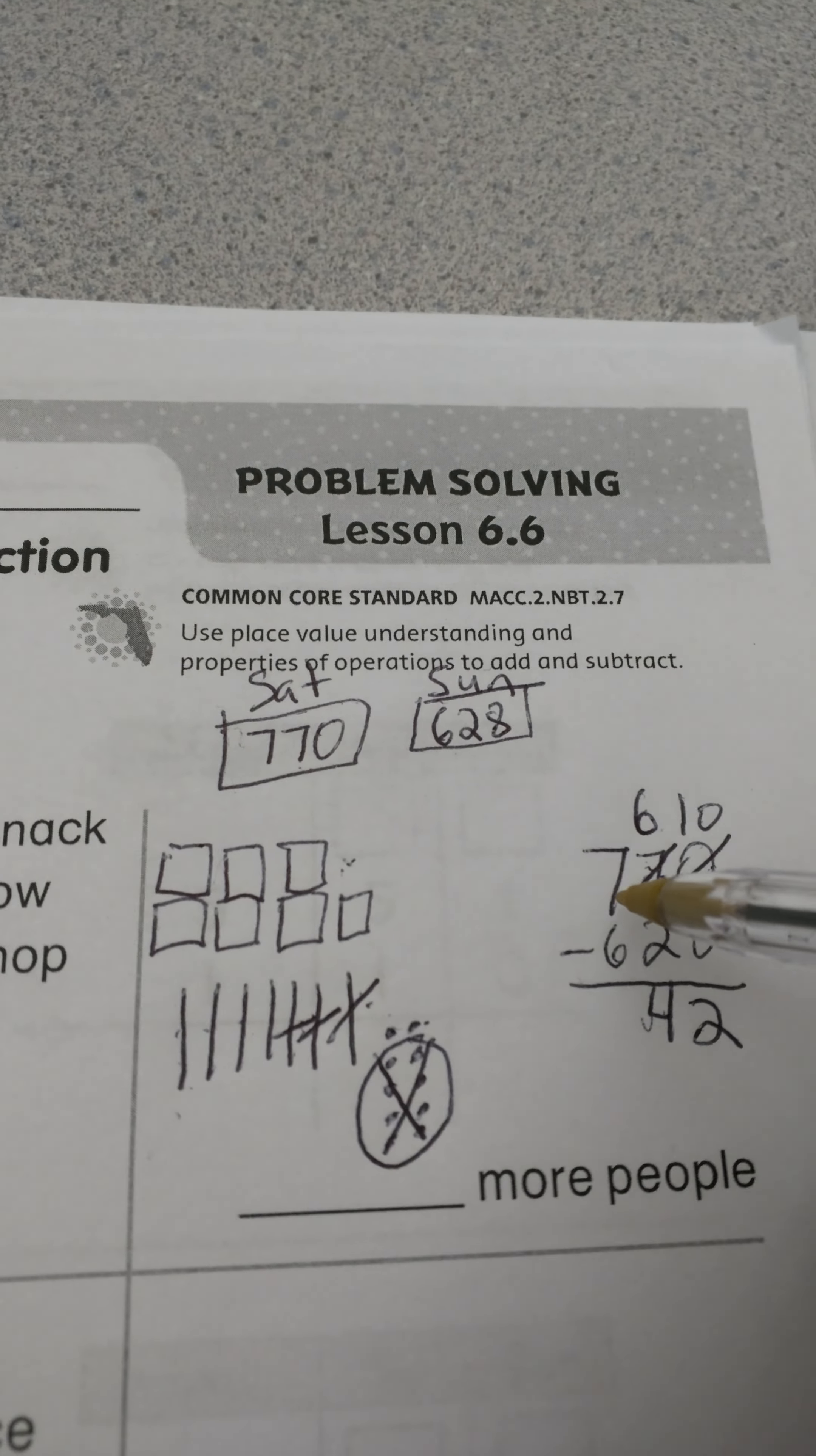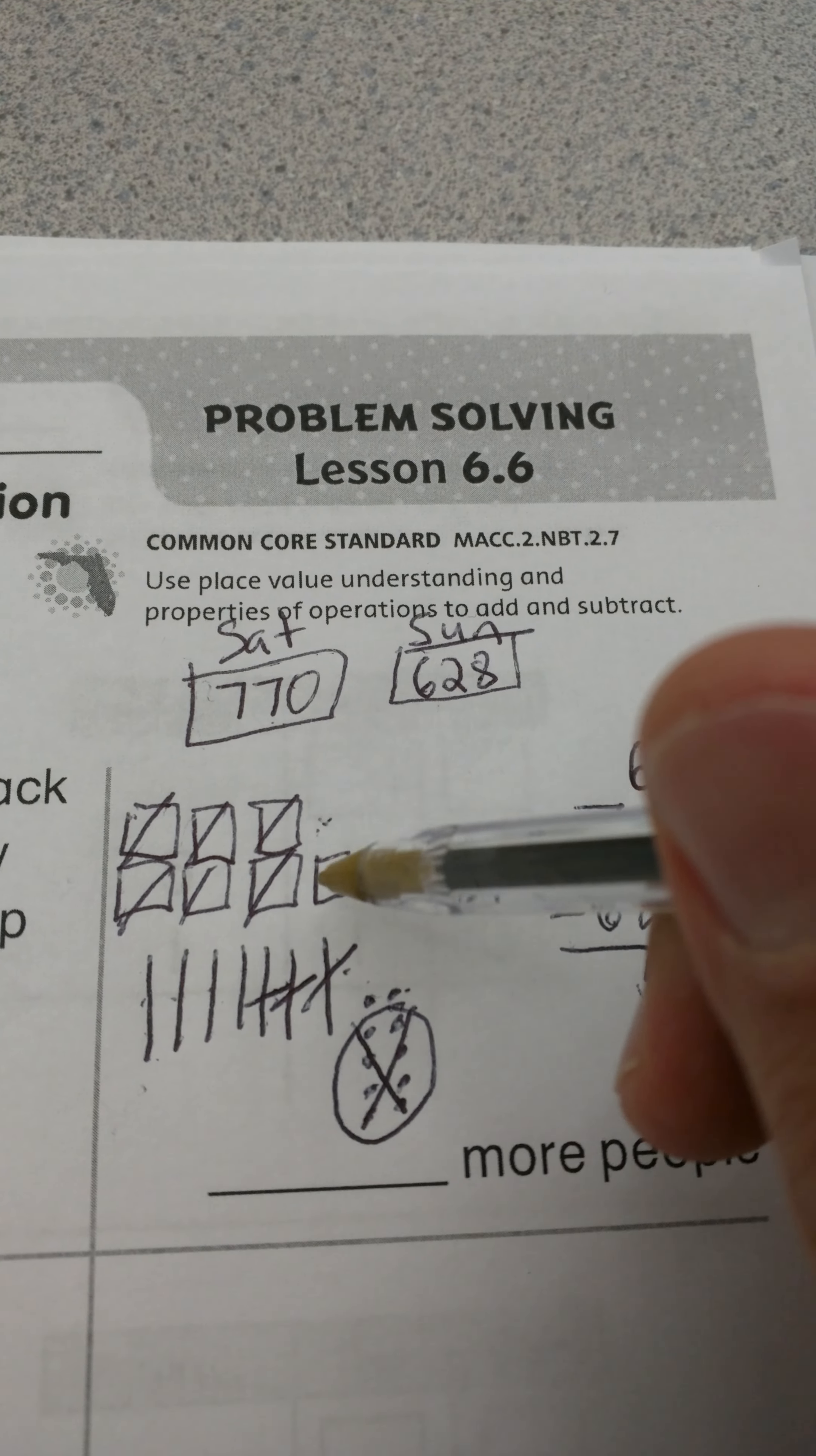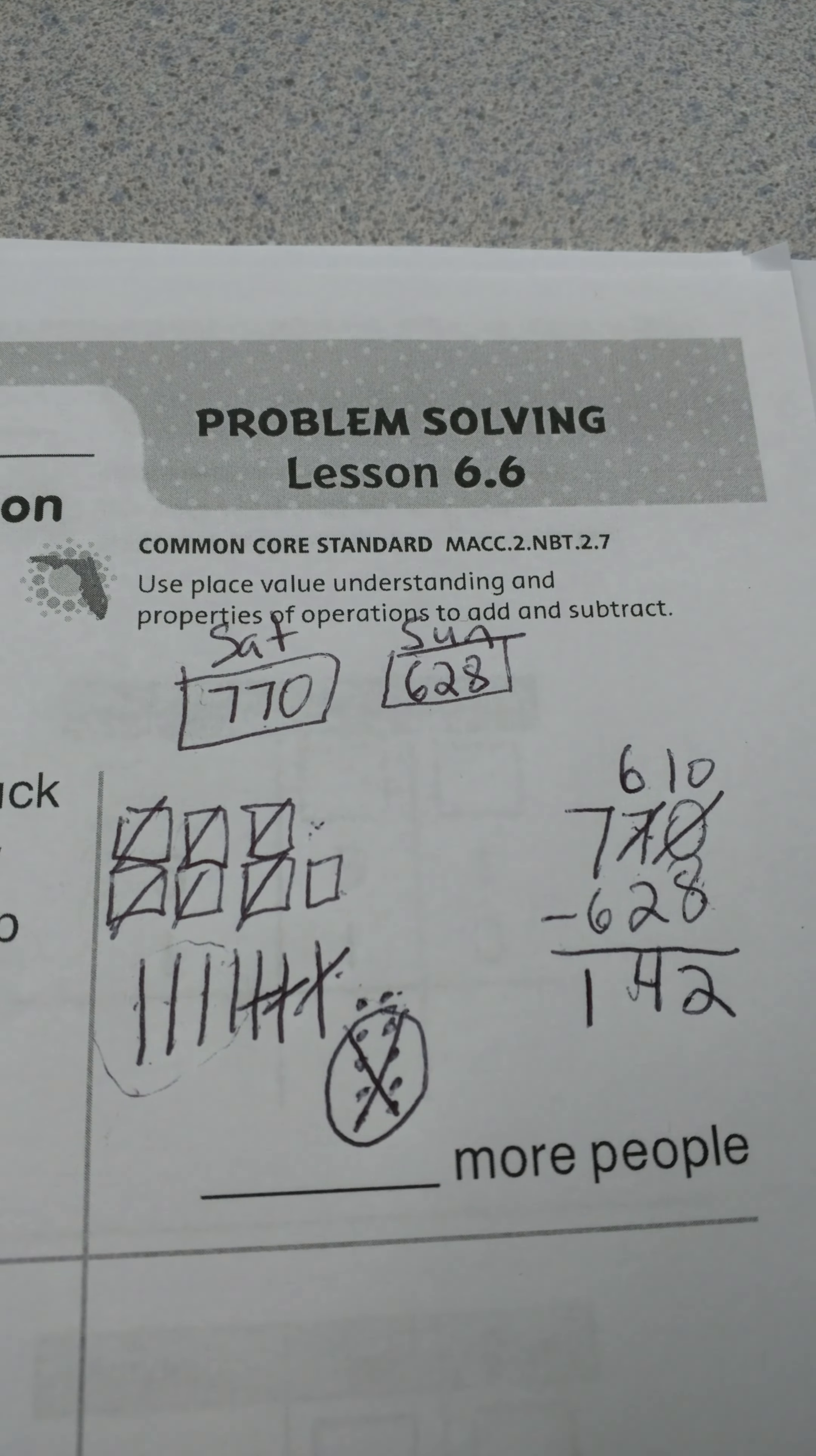Then I go to my last column, which is the hundreds, and I'm going to take away 6 of the hundreds. So 1, 2, 3, 4, 5, 6 hundreds. I have 1 hundred left. That makes my answer 142: 1 hundred, 4 tens here, and 2 ones.